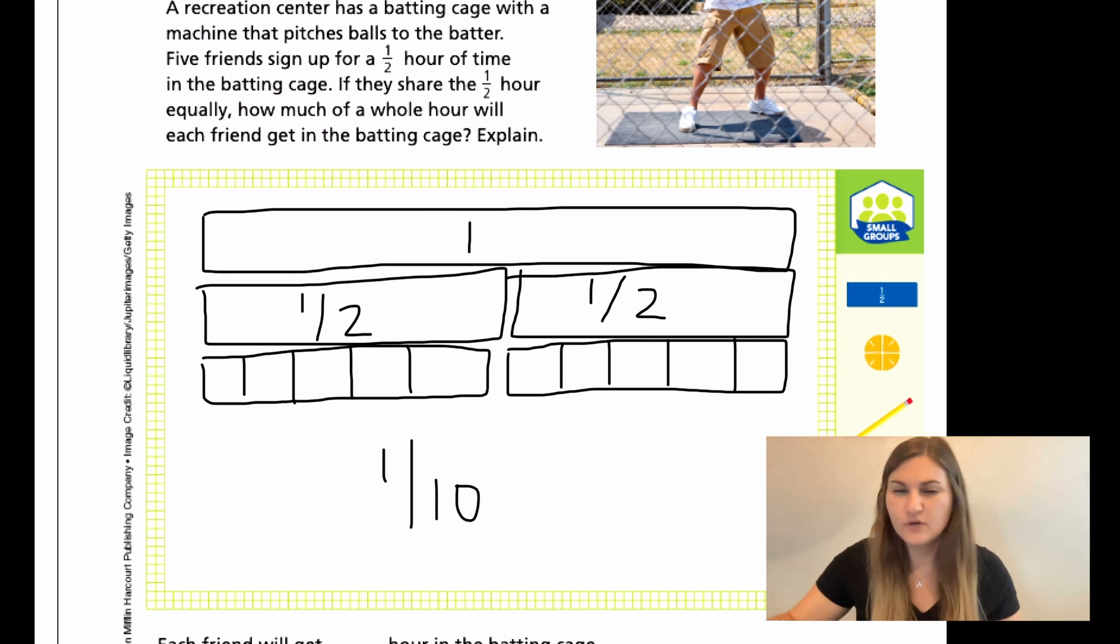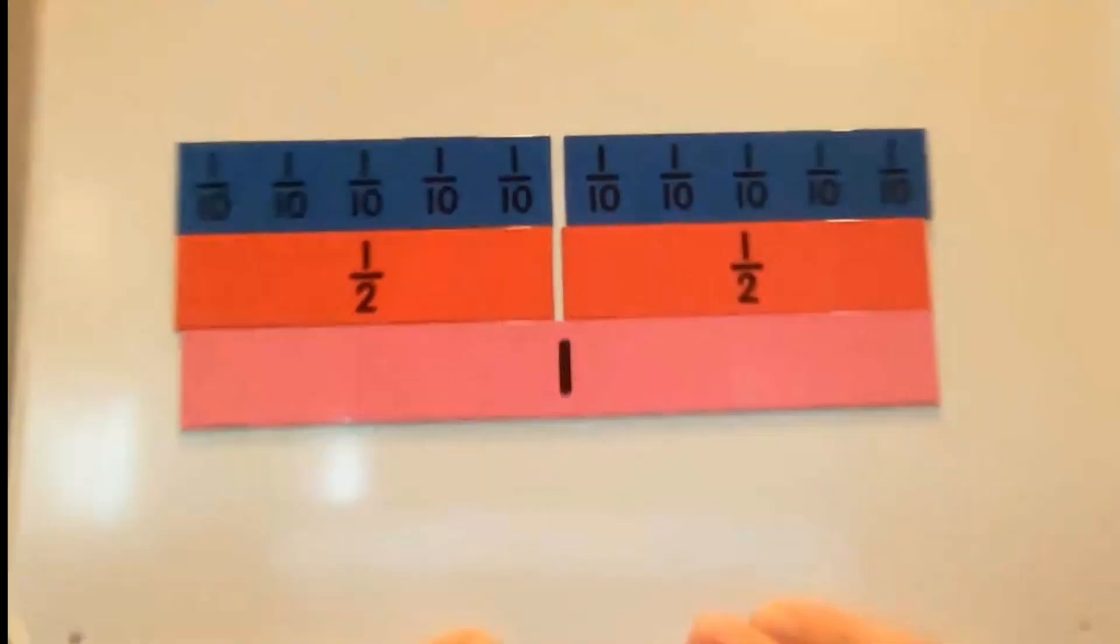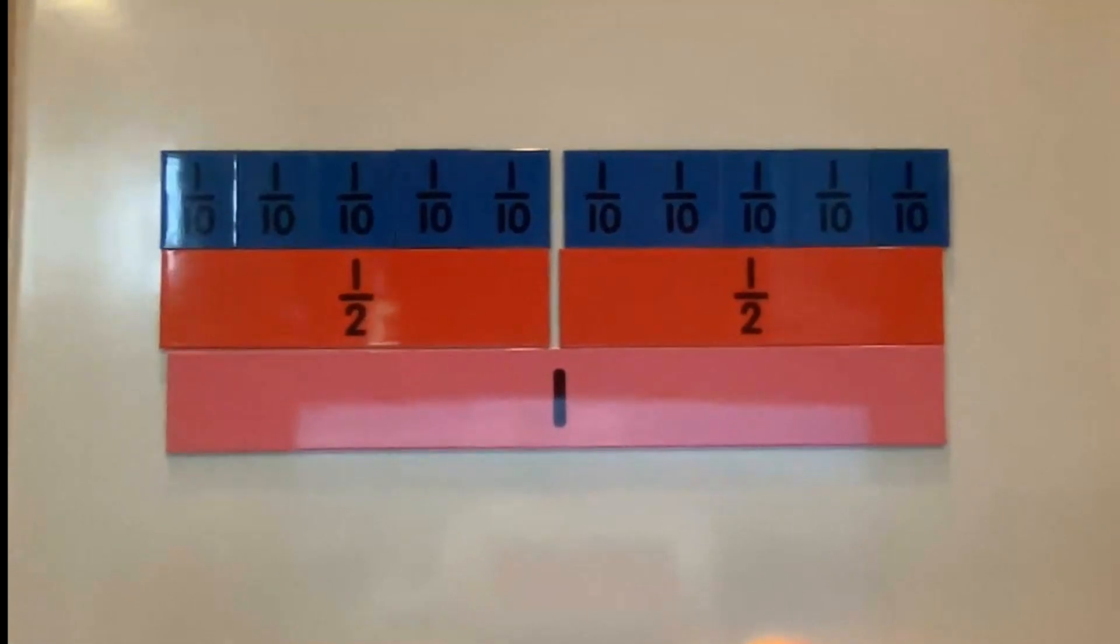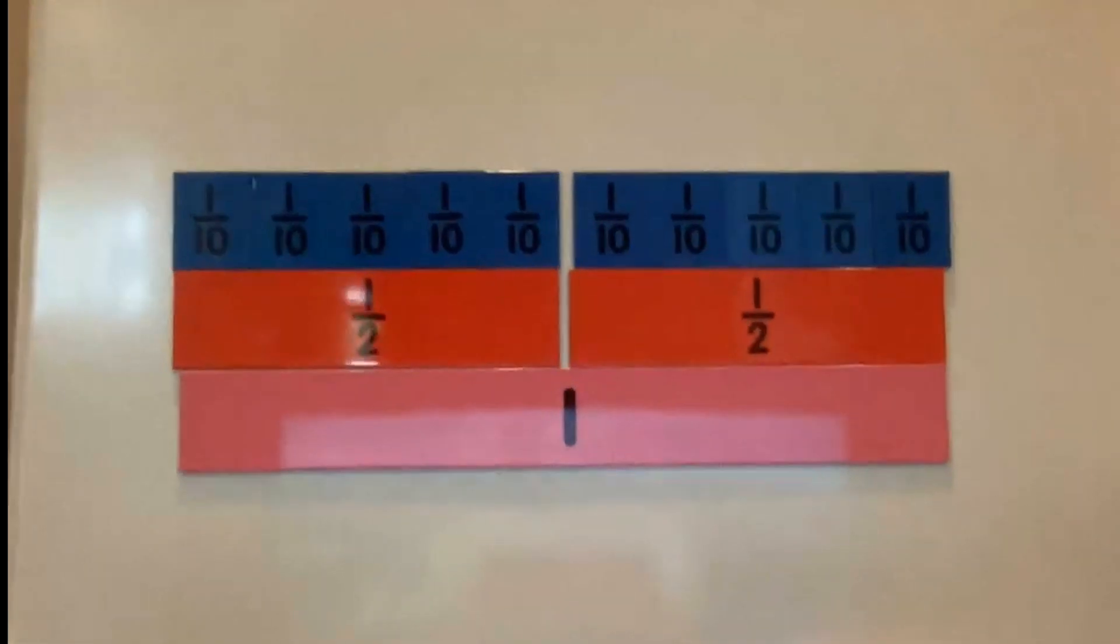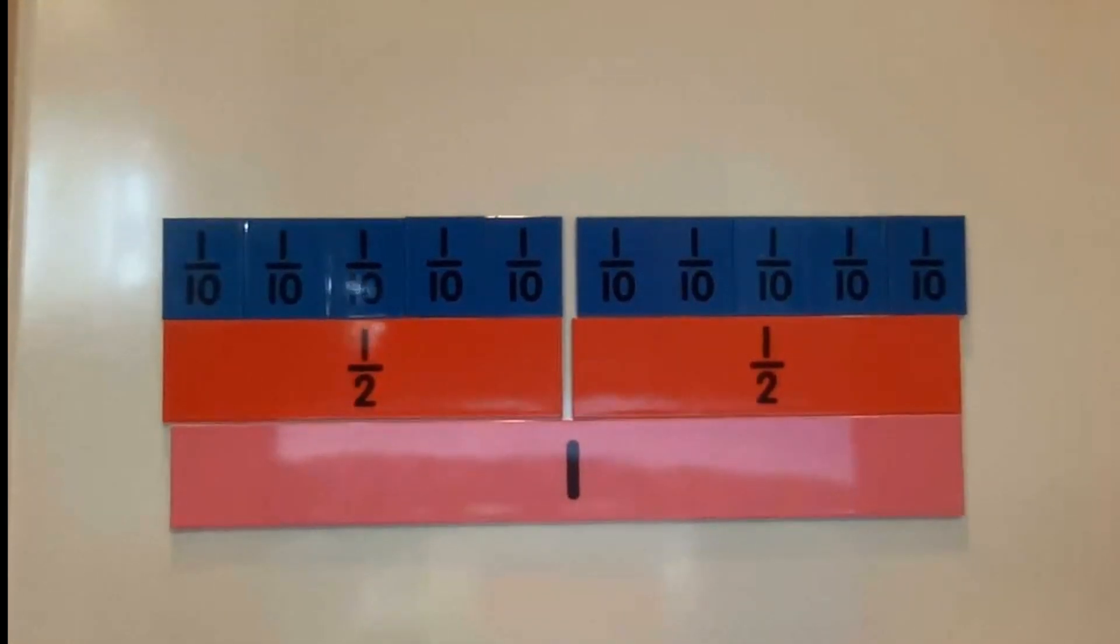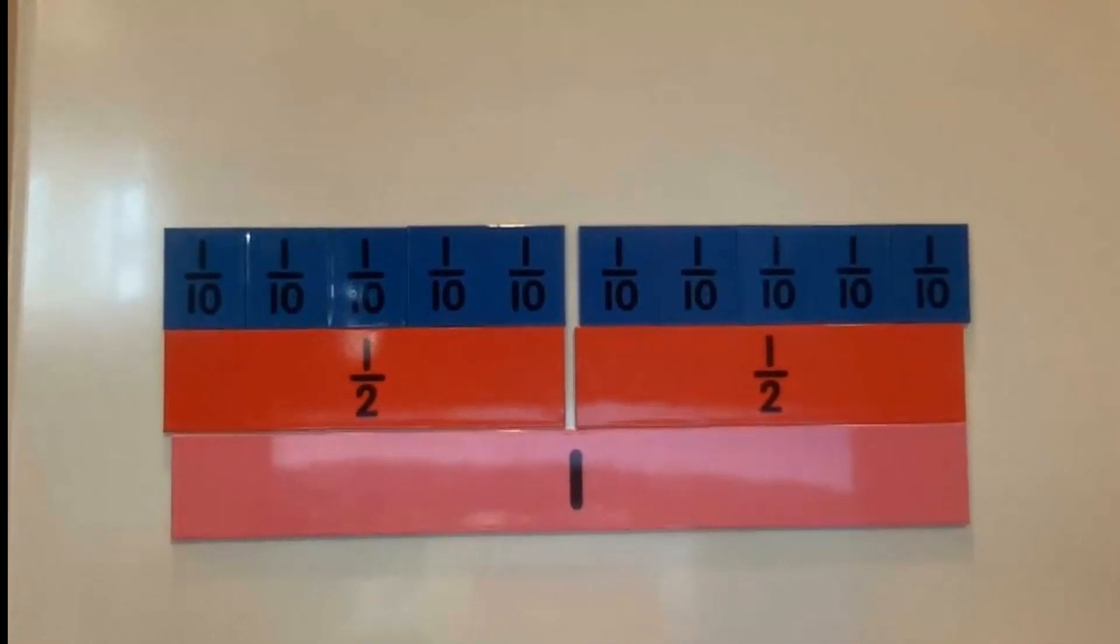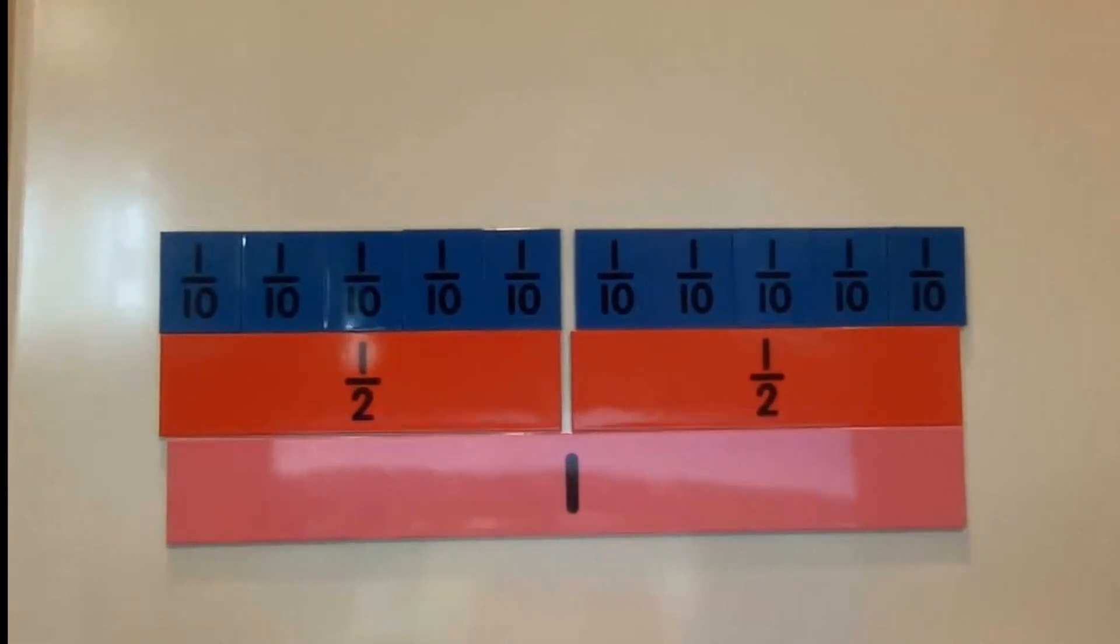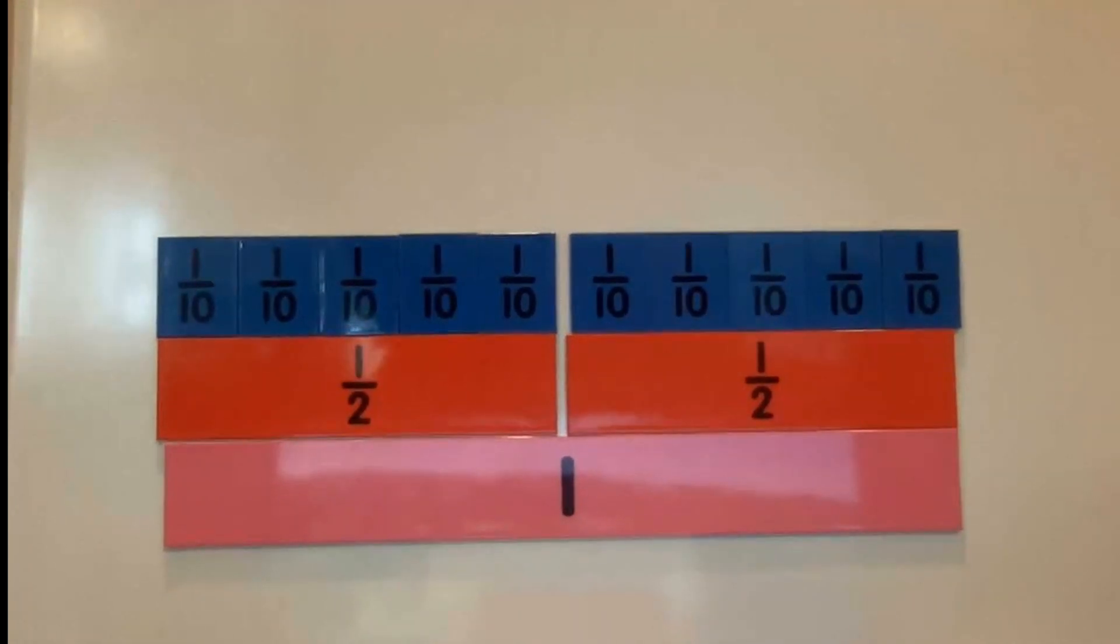So each friend will get one 10th of an hour in the batting cage. I do want to show you real quick what this would look like with my fraction pieces. So if we look at this board here, I have my one whole and I have my two halves. And I left a little bit of a space just so you could see really easily the split. And then I show my one 10th and notice there are five of those one 10th on the one side of the half. And then there are five of the one 10th on the other side of the half. So this is what it would look like with our fraction pieces.